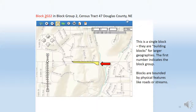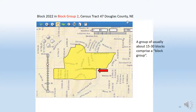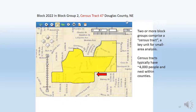The census block is the smallest building block of how the census does its business. For example, census block 2022 is right at the University of Nebraska Omaha — a small strip of land bounded by actual physical features like roads and streams. From the block, we get a block group — this is block group two in Douglas County, consisting of several blocks. From the blocks, we get what is called the census tract, which is usually the smallest entity people refer to when talking about census data. This is useful for businesses who want to know things like the median family income in census tract 47 of Douglas County, helping them determine where they want to build.